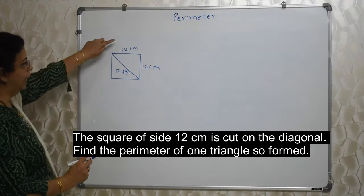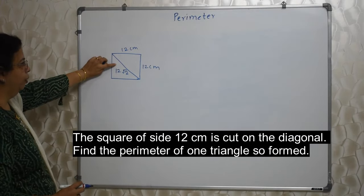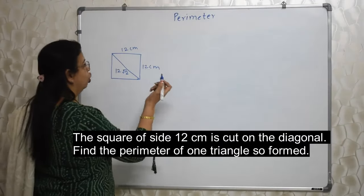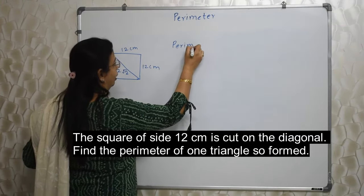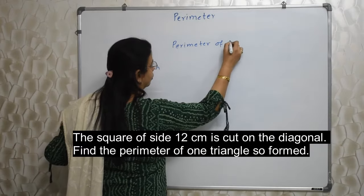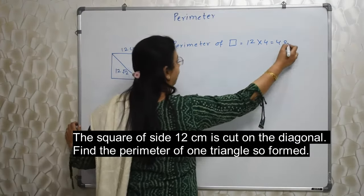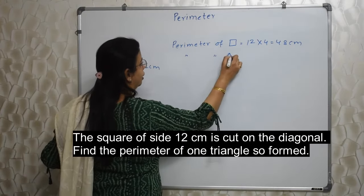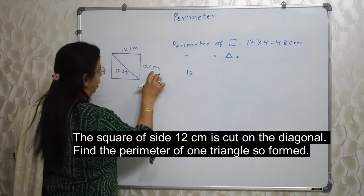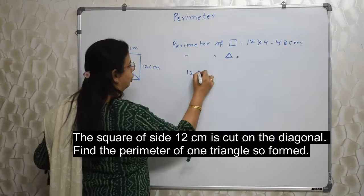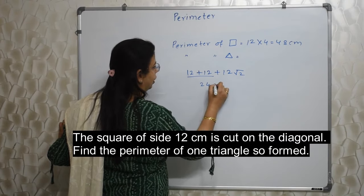You should know this: if the side is x, the diagonal of the square will be x root 2. I am using that property of a square. Once you know this, the job is easy. First, we need to find out the perimeter of the square. Perimeter of the square is 12 into 4, that is 48 cm. And the perimeter of its triangle is 12 plus 12 plus 12 root 2, which gives us 24 plus 12 root 2.